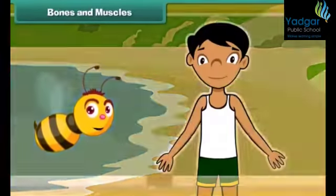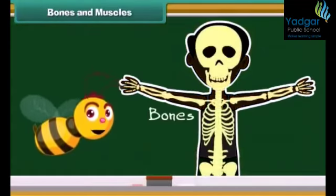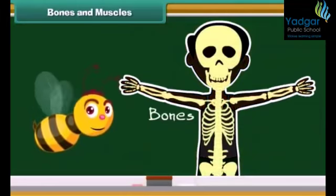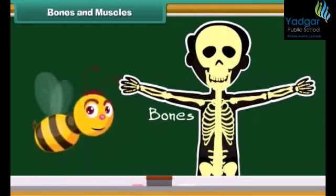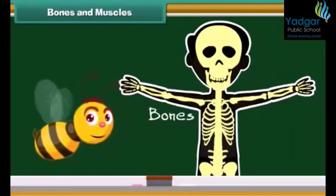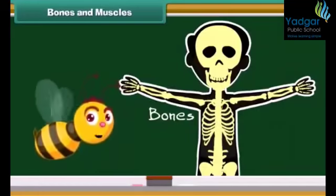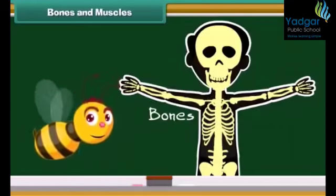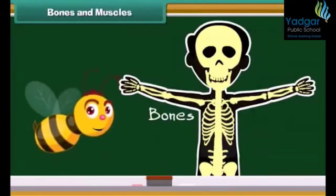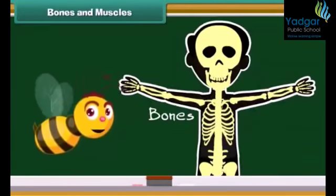Our body is made up of bones and muscles. Bones are the hard part of our body. Bones together form a skeleton which provides shape to our body, and they also protect our body from external injuries.